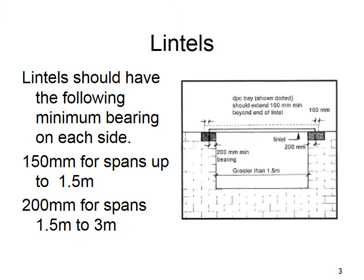Lintels should have the following minimum bearing on each side: 150mm for spans up to 1.5 metres, and 200mm for spans of 1.5 to 3 metres. Bearing refers to how much the lintel is sitting in onto the block work on either side.